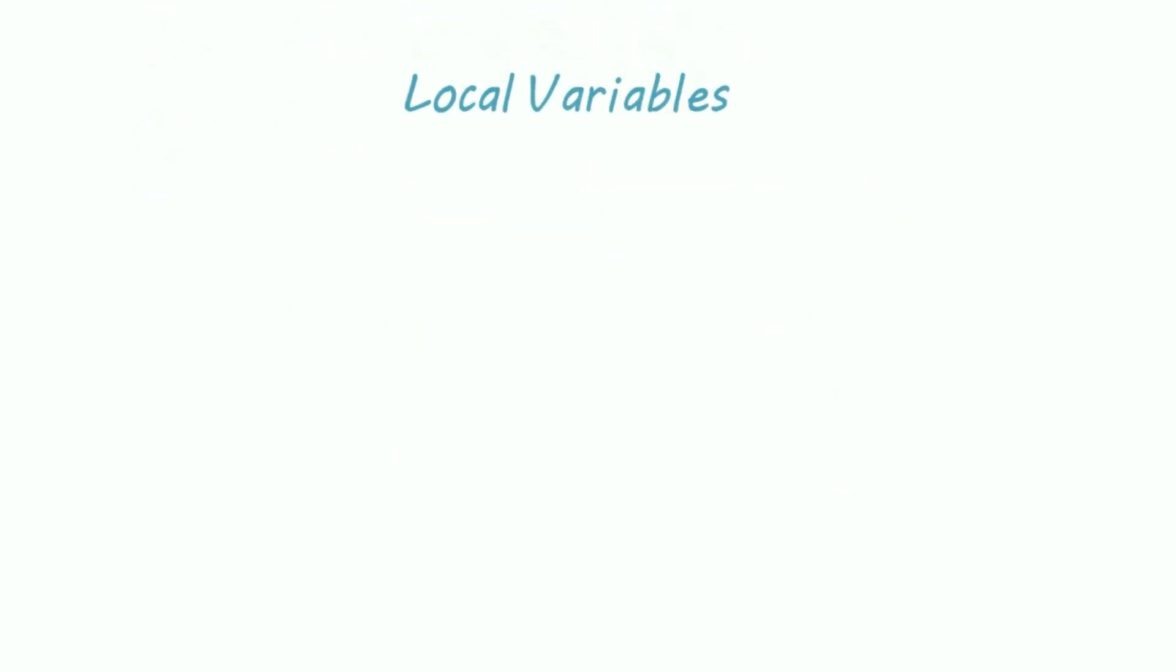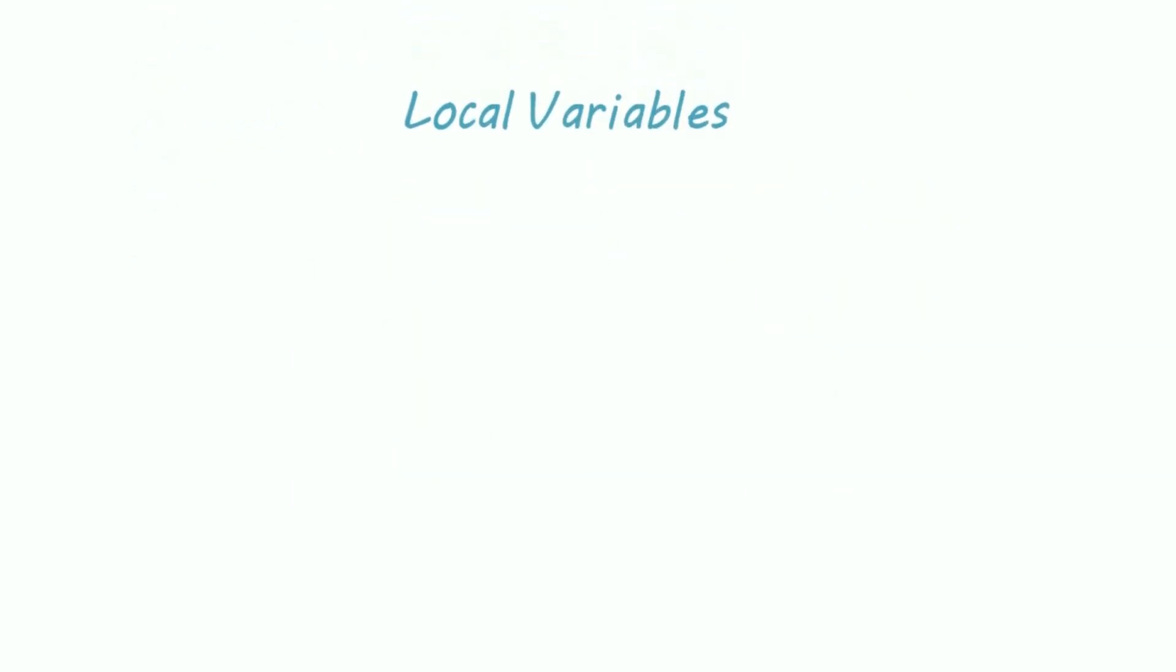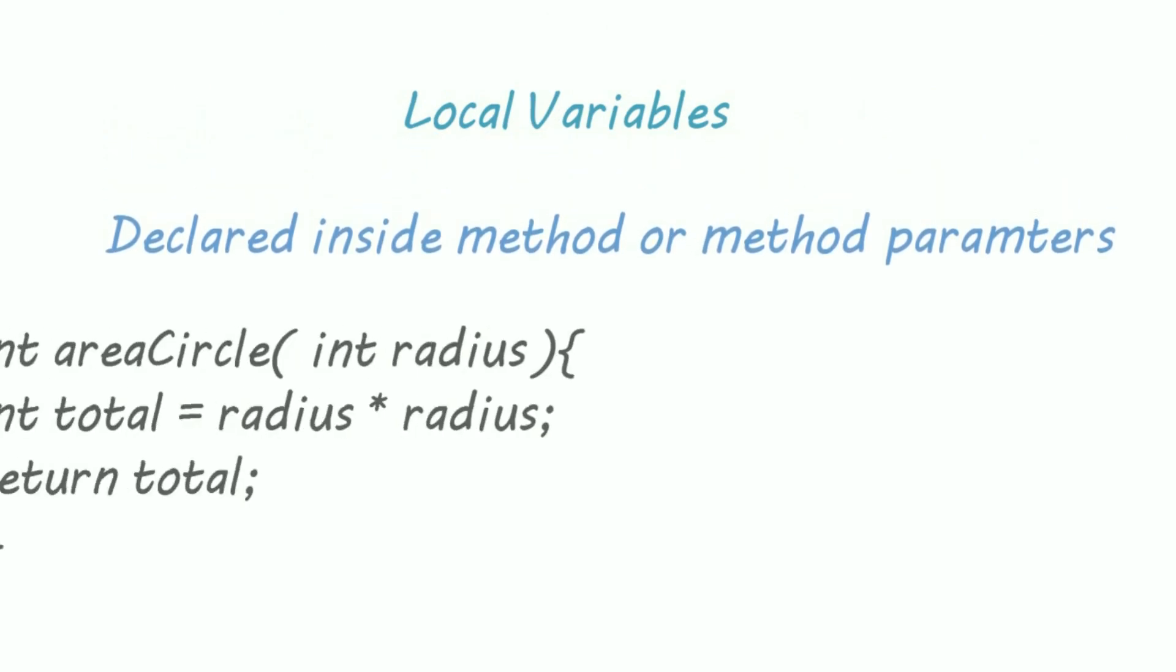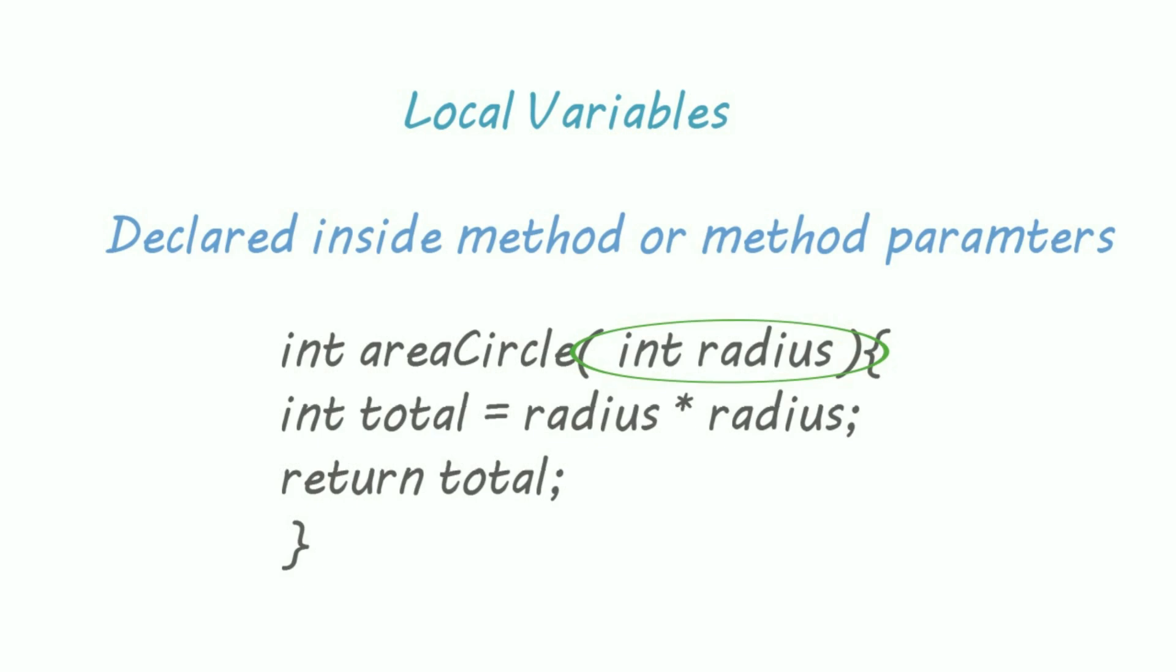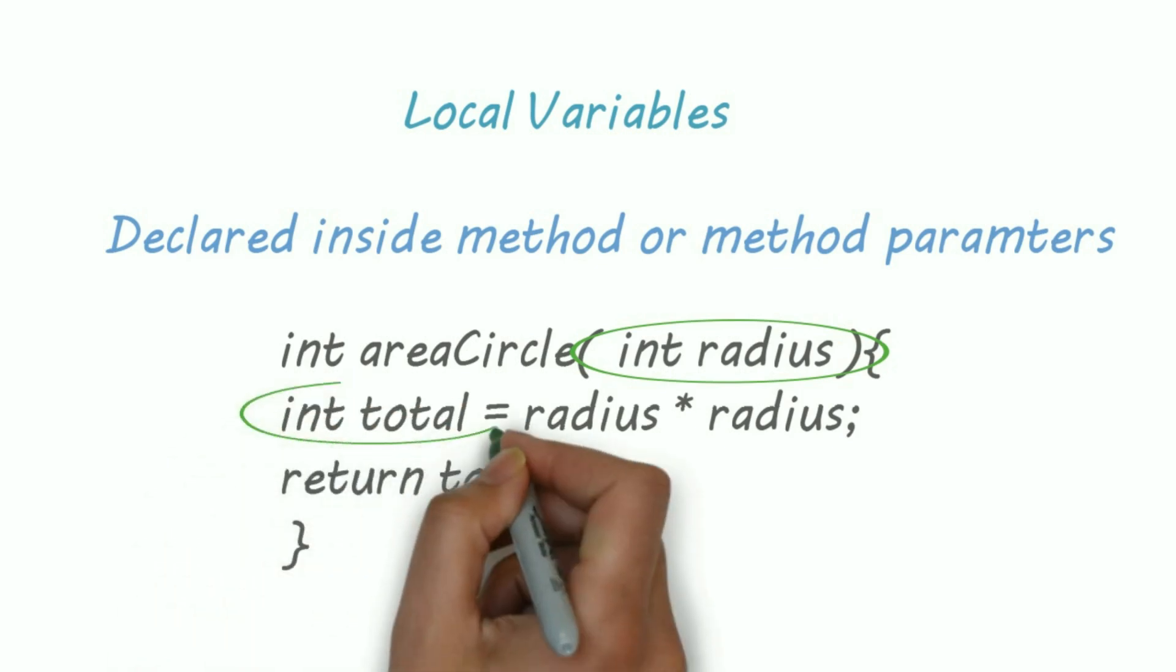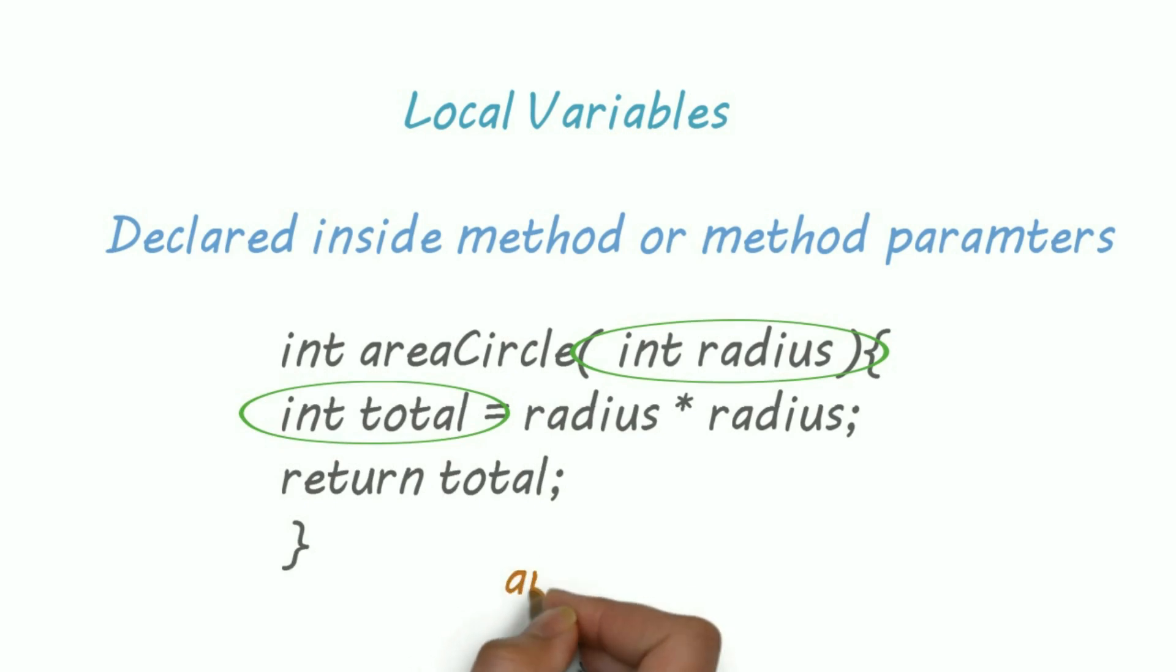Now, what are local variables? These are declared in methods or in method parameters. For example, in this method, the parameter radius is a local variable and the total is also a local variable.